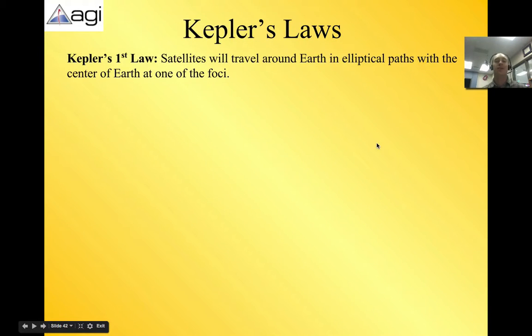So here are Kepler's laws in review. We have first law, satellites will travel around Earth in elliptical paths with the center of Earth as one of the foci. That is Kepler's first law. So we've taken a look at all of this junk and now we are throwing this last piece of hopefully clarification at you.